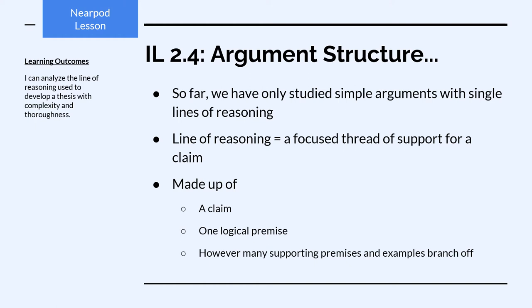So far in our study of argumentation, we have only studied simple arguments with single lines of reasoning. A line of reasoning is just a focused thread of support for a claim. So any idea that supports a claim, as well as the ideas that support that idea and the examples that support those ideas — that whole thread we call a line of reasoning. A line of reasoning is made up of the claim plus at least one logical premise and however many supporting premises and examples that support that first logical premise.